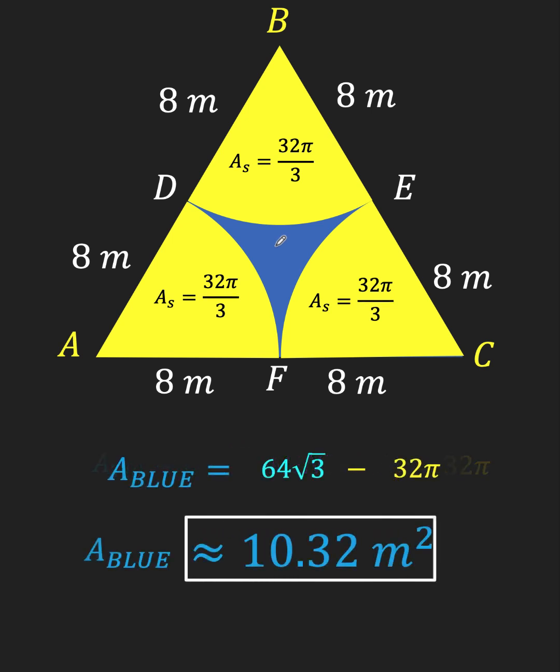So, subtracting now 64 square root of 3 minus 32π, that gives us approximately 10.32 square meters. And this is now the area of this blue shaded region.